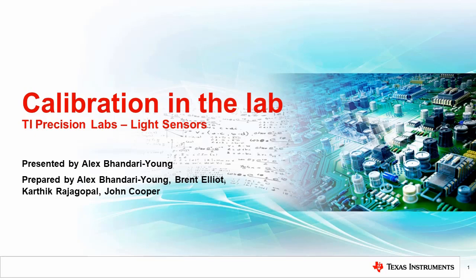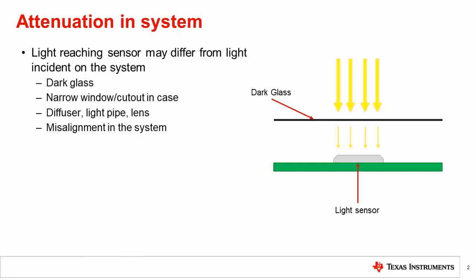As mentioned in the previous video, there are a number of situations where the sensor reading is different from the light incident on the system, and compensation is required. A dark cover glass used to hide the sensor, a narrow window or cutout in the product case, diffusers, light pipes, lenses, as well as misalignment between components in the system can all cause attenuation and may require calibration.